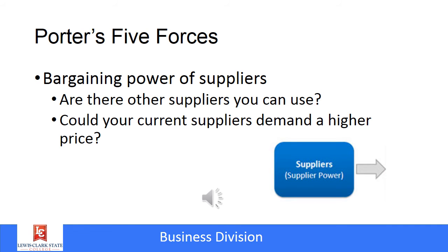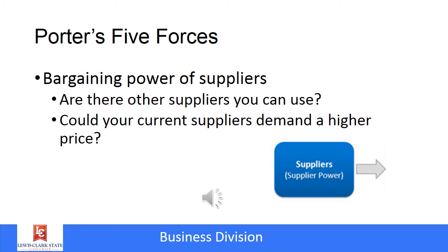Porter also has a business look at the bargaining power of suppliers. Do you have just a few suppliers who could demand higher prices, or are there many suppliers where you could get the products you need? Similarly, Porter has us examine the bargaining power of customers. Do we have just a few very large customers who could say they'll find a different place to buy if we don't lower prices, or do we have lots of customers who don't have much power over us?